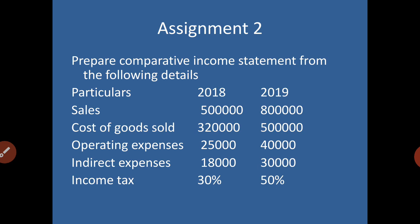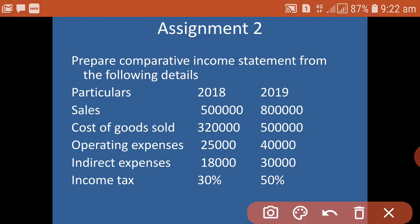Now I am giving you another example as an assignment. Please solve these problems in your notebook. The details include sales, cost of goods sold, operating expenses, indirect expenses, and income tax — given for two years. You need to prepare the comparative income statement with two additional columns.